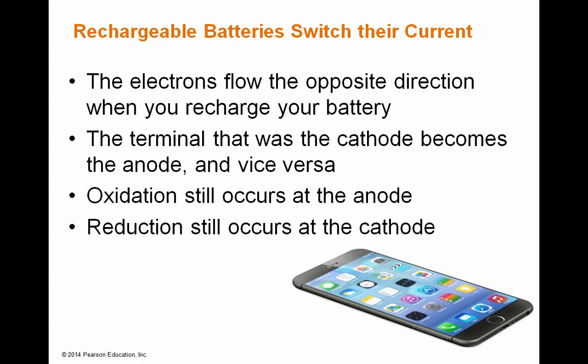Rechargeable batteries are a little different — they can switch their current direction in order to regenerate the chemistry. If you don't have a rechargeable battery, you can't regenerate the chemistry; it just doesn't work. But with a rechargeable battery, not only can electrons flow in one direction to produce power, you can reverse that flow in the opposite direction. So when you plug in your phone or iPad to the wall, you're forcing electrons from the wall into your phone, recharging it. The terminal that was the cathode becomes the anode and vice versa, but oxidation always occurs at the anode and reduction always at the cathode.